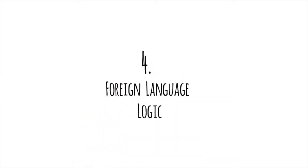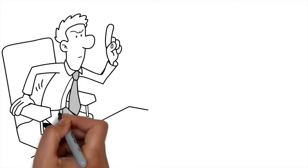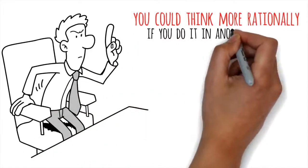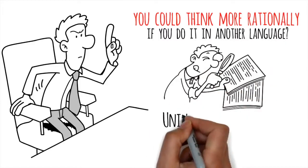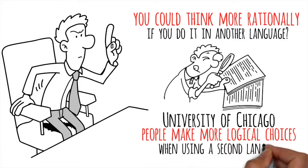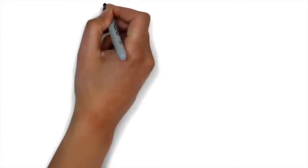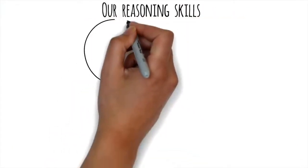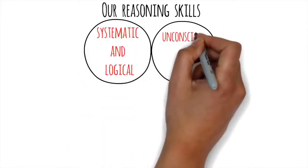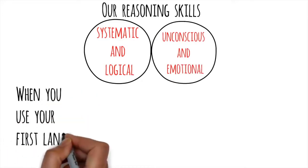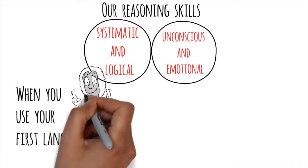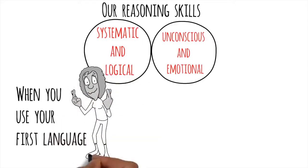Foreign Language Logic. We all make bad decisions, but what if I told you that you could think more rationally if you do it in another language? A study from the University of Chicago found that people make more logical choices when using a second language. Our reasoning skills are divided into two parts. One is systematic and logical, while the other is unconscious and emotional. When you use your first language, you let that emotional side take over. Your biases and knee-jerk reactions cloud your judgment.